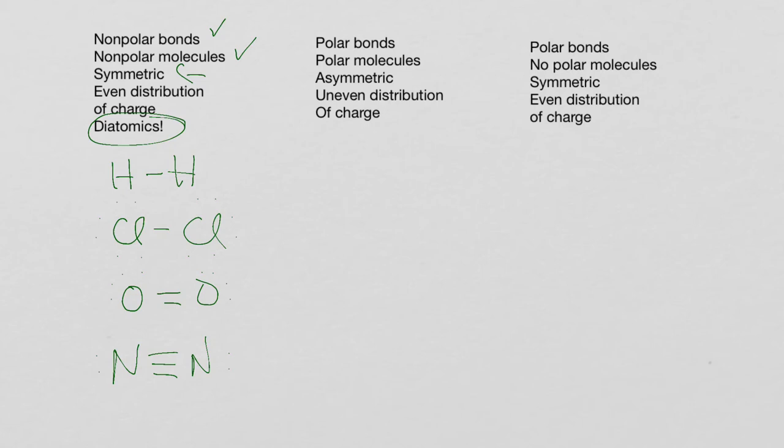For polar bonds, polar molecules, here in the middle, we say that they are asymmetric as far as charge, meaning it's uneven. And the typical ones you would be looking for would be water, H2O, ammonia, NH3, and something like CH3Cl. This is like a chloromethane molecule.